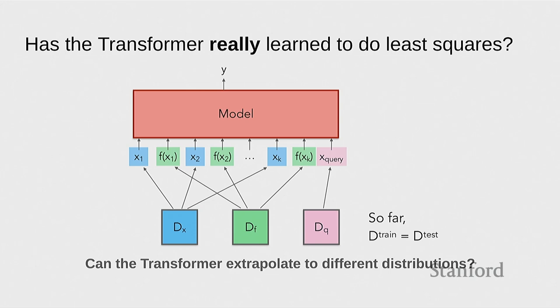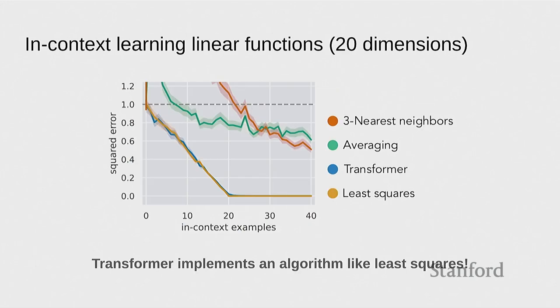Question: how do you measure if it's doing least squares? So the question is how do you know if it's doing least squares. We're only looking at the prediction error. It's most certainly not literally implementing the least squares algorithm — but at least on this distribution, it's behaving like it had run least squares.